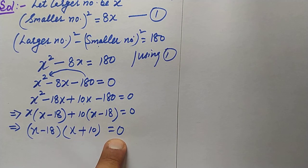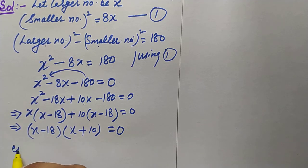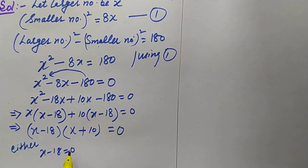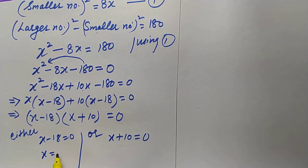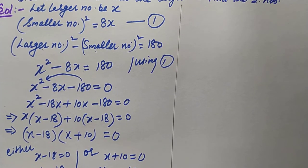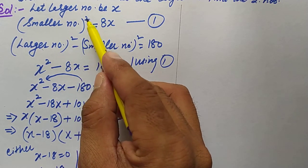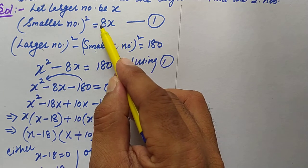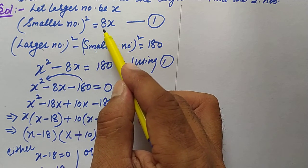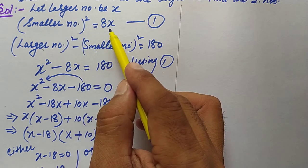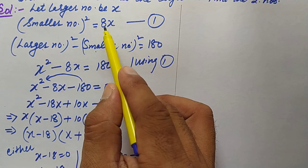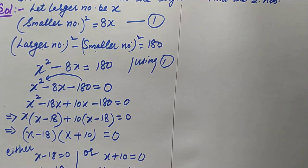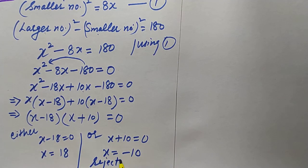Since (x minus 18) is common, we get (x minus 18)(x plus 10) equals zero. So either x minus 18 equals zero, giving x equals 18, or x plus 10 equals zero, giving x equals minus 10. We reject x equals minus 10 because if x is minus 10, then smaller number squared equals 8 times minus 10 equals minus 80, which is not possible since the square of any number cannot be negative.